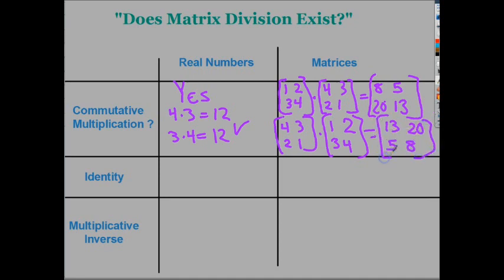So, as you can see, this is not the same as this. So, if multiplication, is multiplication commutative with a matrix? No. Matrices do not have commutative multiplication.